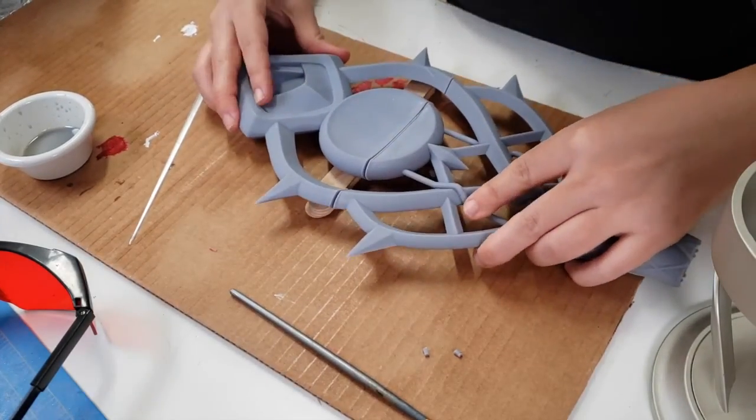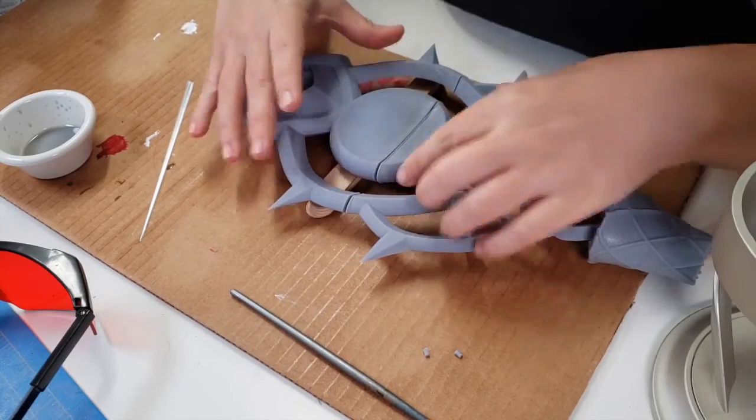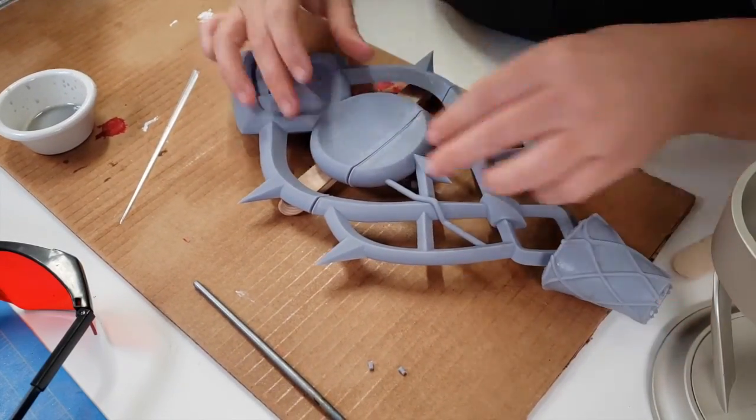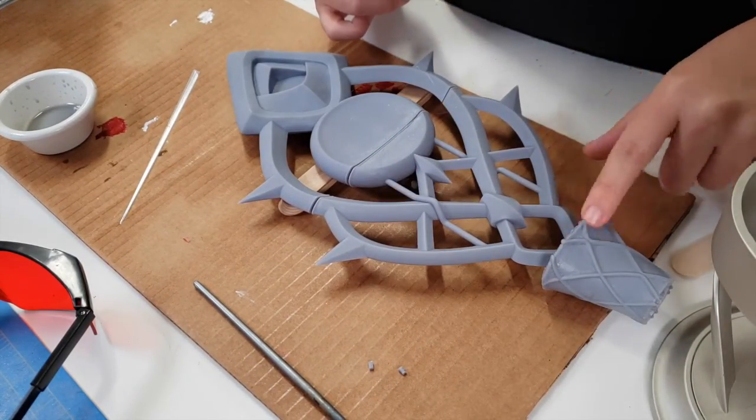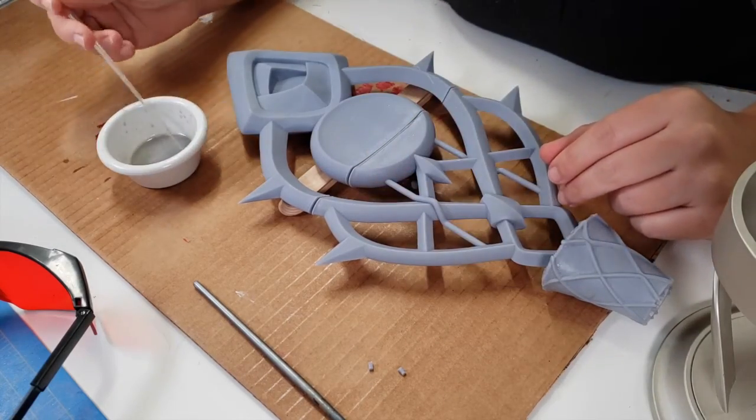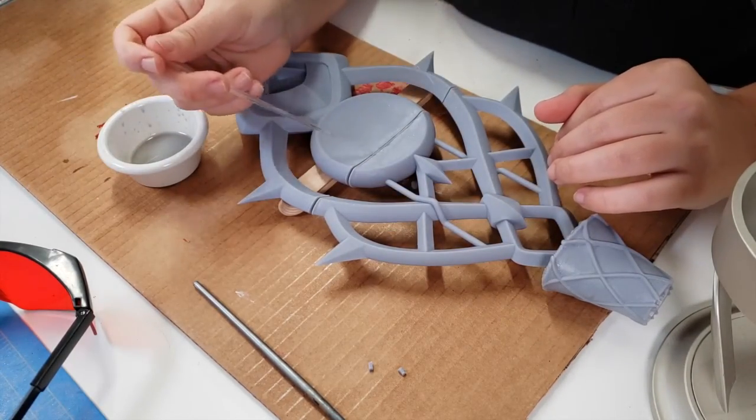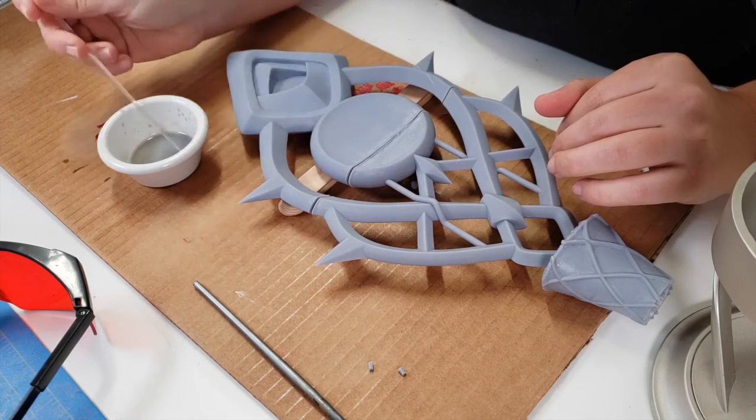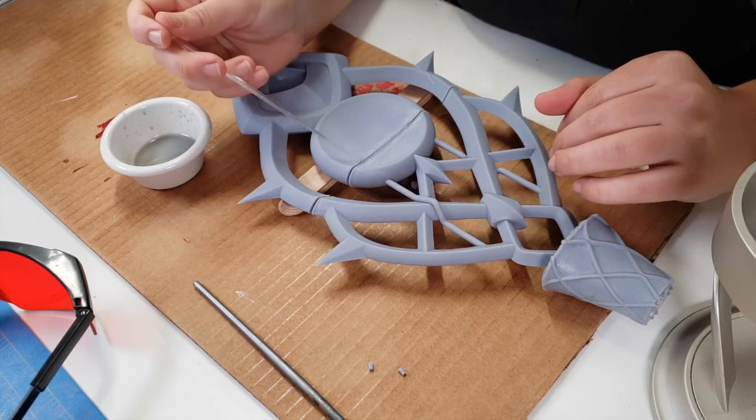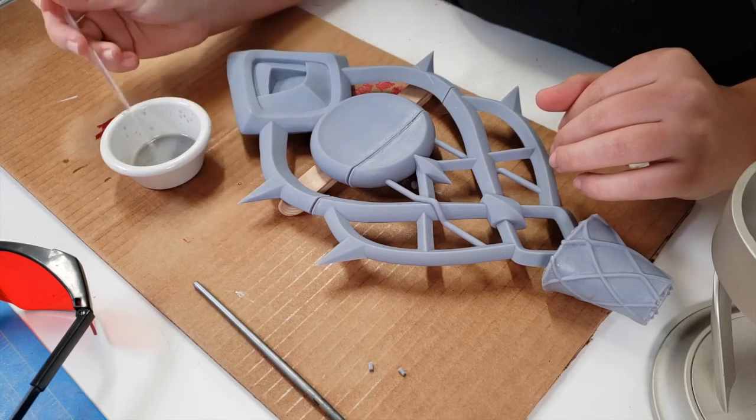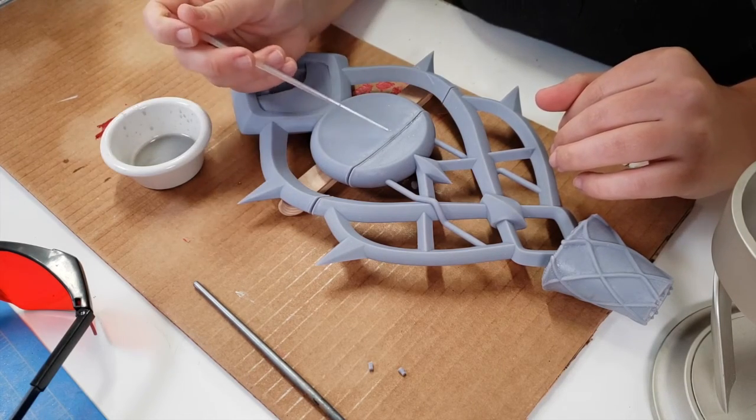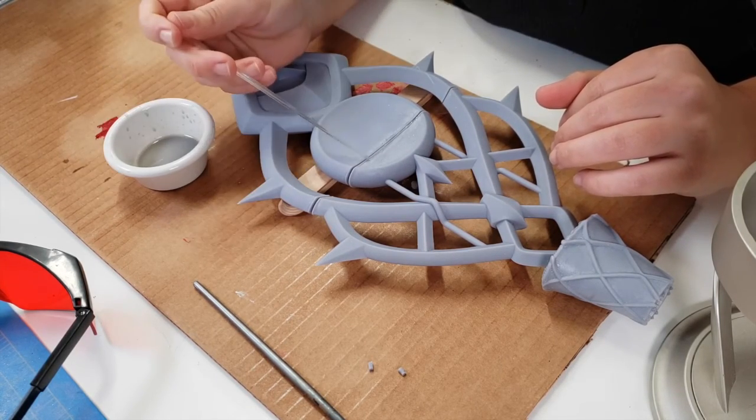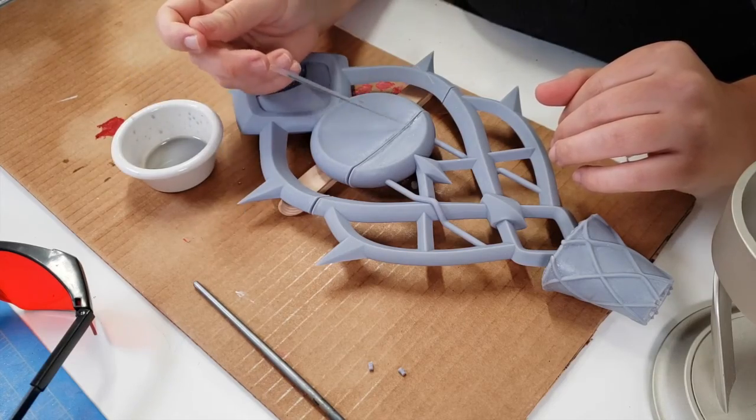To get this to stay pretty level I'm going to use some popsicle sticks so it doesn't fluctuate and bend, so it's more stable. Then I'm going to be able to put some of the resin and fill in these gaps and try to seal it up to try to get it back to one piece and look seamless as if it was never two pieces. That is definitely the goal.